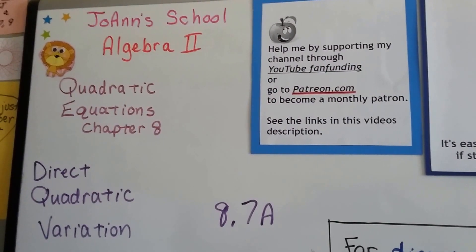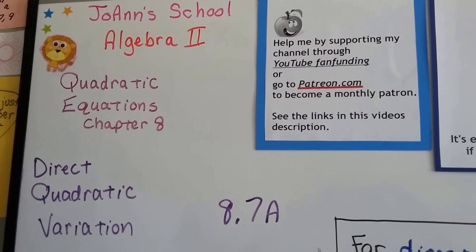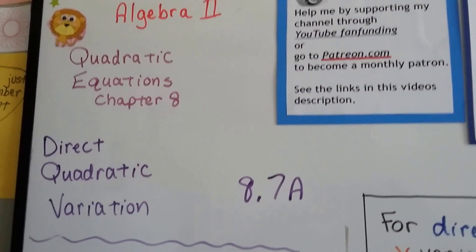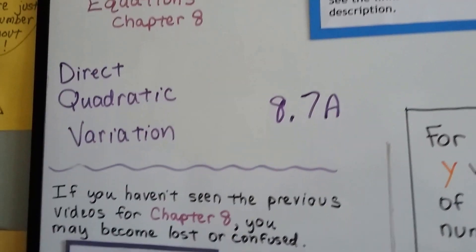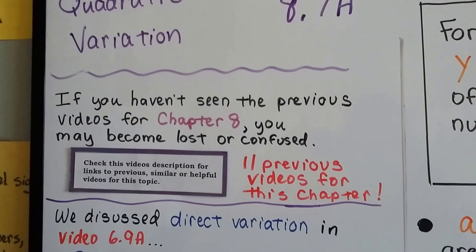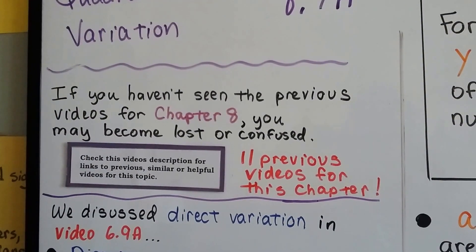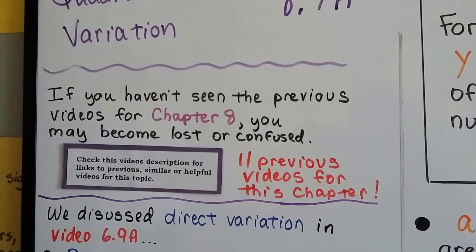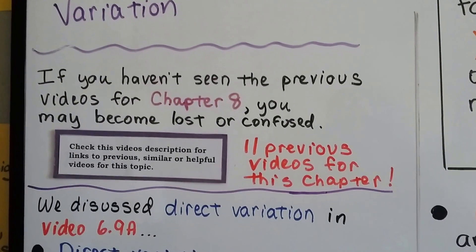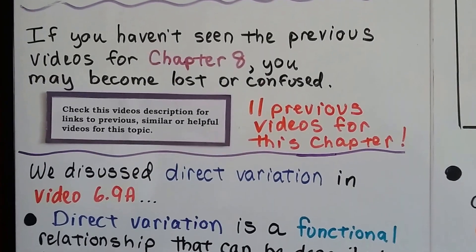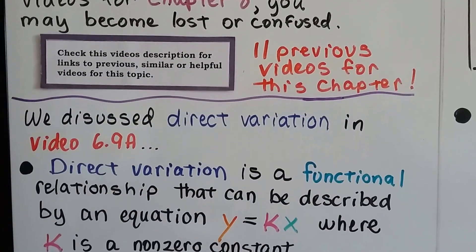Algebra 2, 8.7a, we're going to talk about direct quadratic variation. We talked about this last year in Algebra 1 at the end of the year. We also talked about it earlier in this playlist in video 6.9a. If you've missed any of the previous videos and you've become lost or confused during this one, my advice is to click on the description and find out where you lost your place.